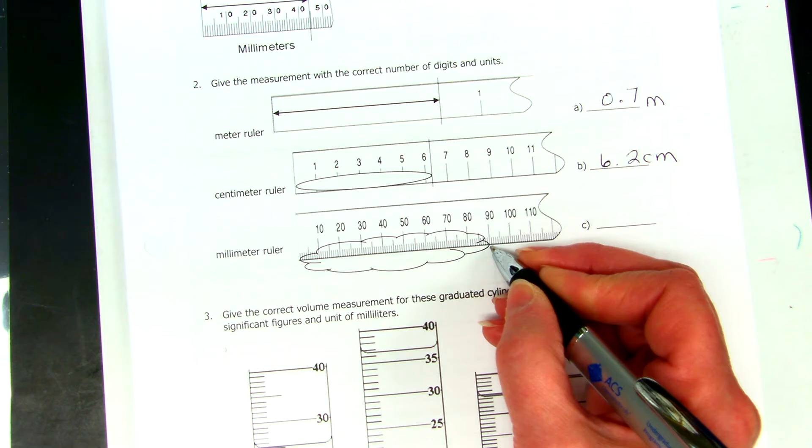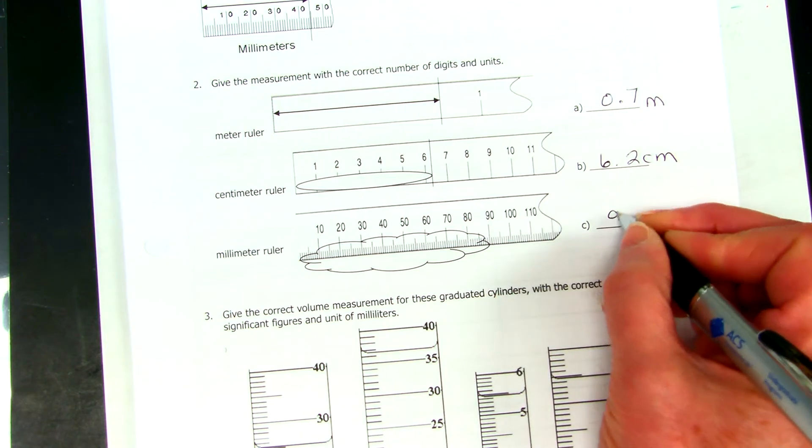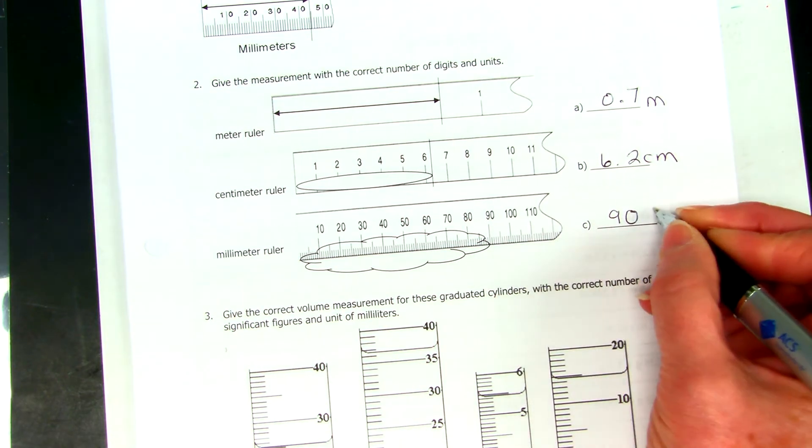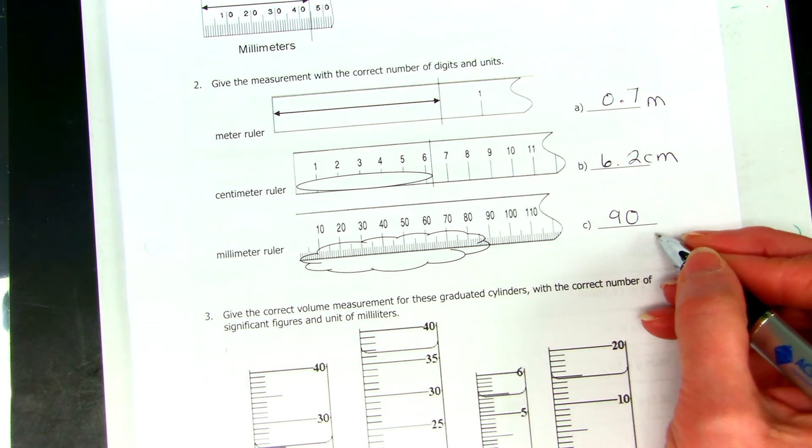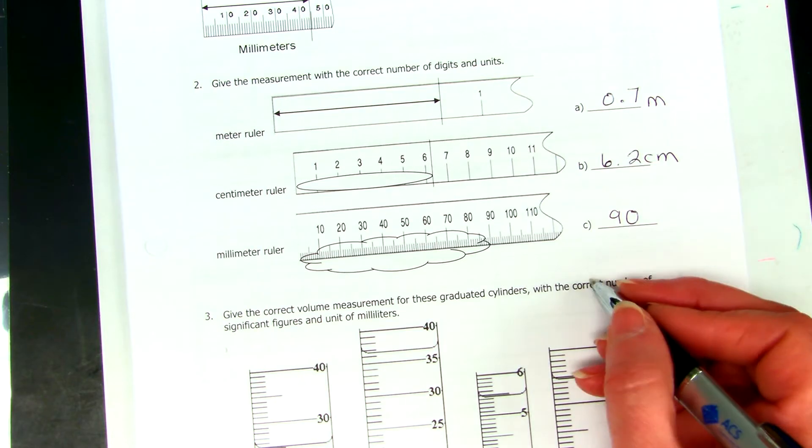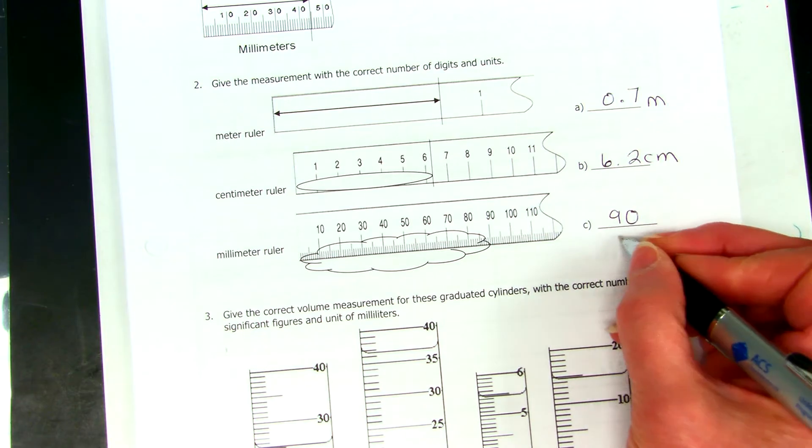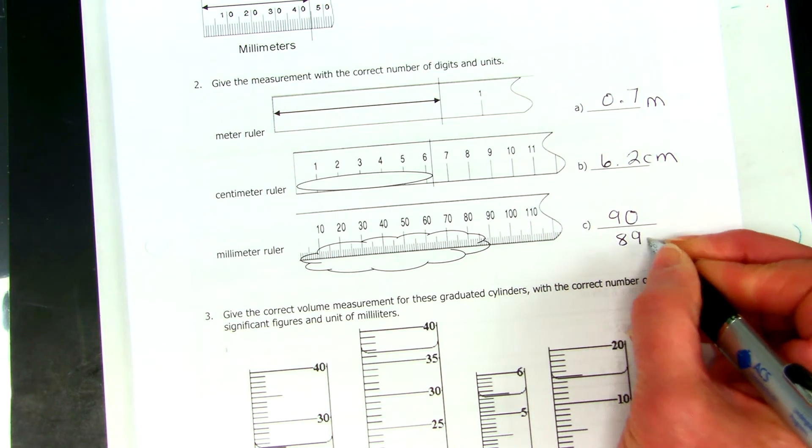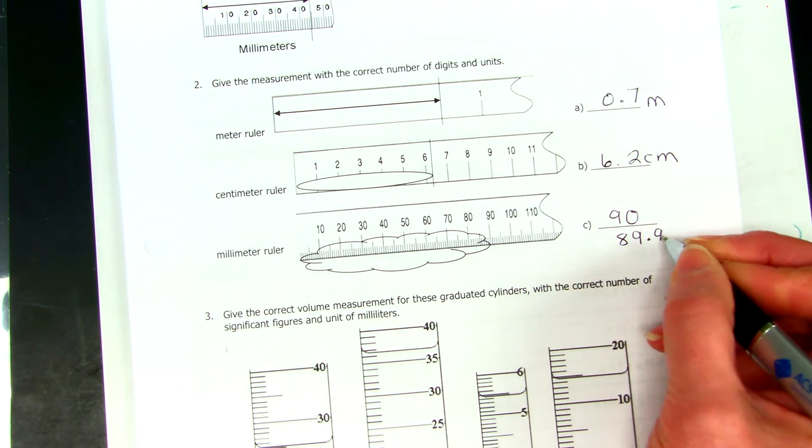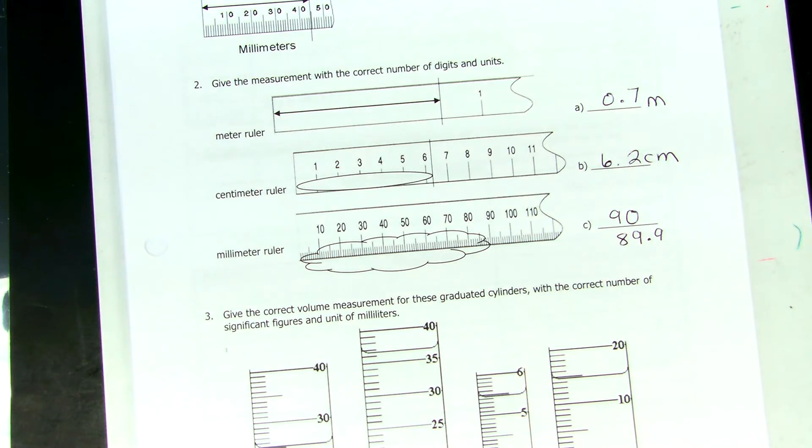So, how many digits can we get? Did you all have 90? Really? 89.9 was another option. Did anybody have anything different?